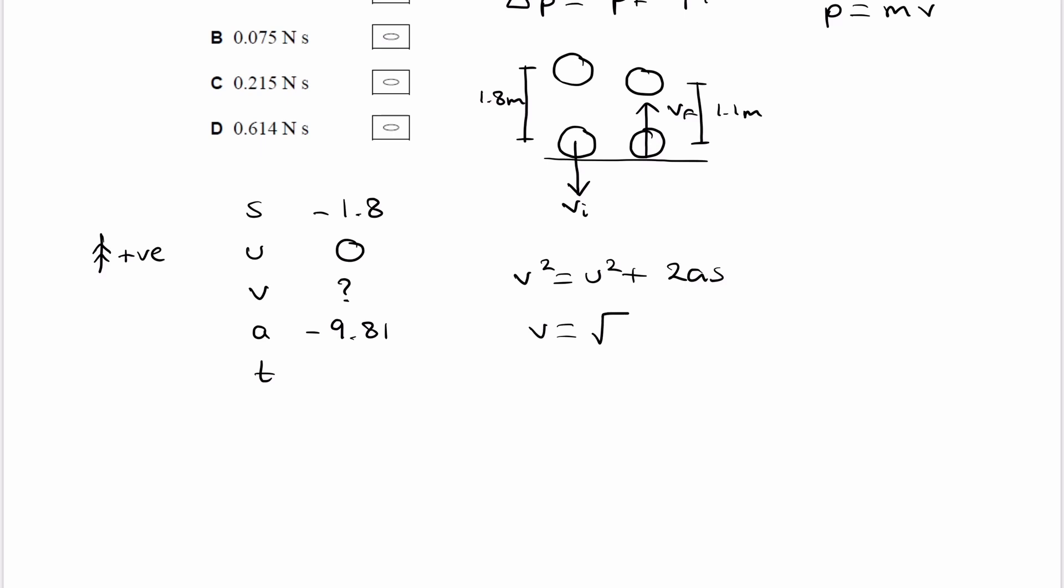So v becomes the square root of just 2as as the u squared goes away. And this is then square root of 2 times minus 9.81 times minus 1.8, and that gives us 5.94 meters per second. So we defined the upwards direction to be positive, but as we can see from our diagram, the velocity of the ball when it hits the ground is negative as it's going downwards. So when we square rooted this here, we actually want it to be the negative version of the number. So then our velocity when the ball hits the ground, which we call vi, would be minus 5.94.